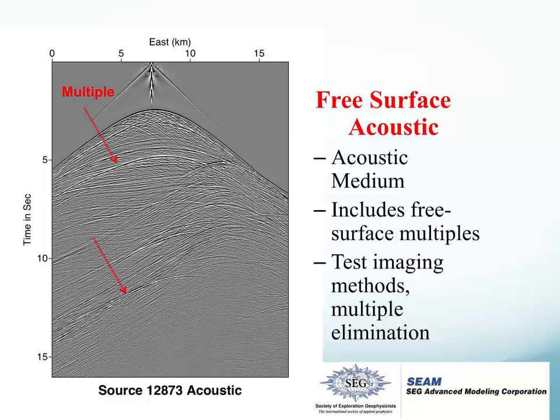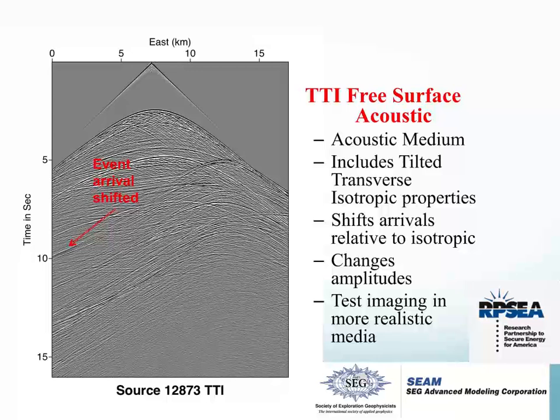Those free surface multiples add a lot of complication but make the data set much more realistic. Comparing the free surface gather with the TTI simulation, you can see that the arrival time has changed a little bit at long offsets, because the anisotropy component of TTI makes arrivals at long offset have different arrival times.